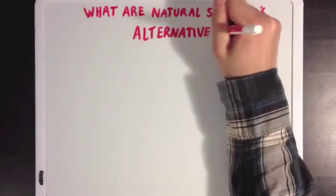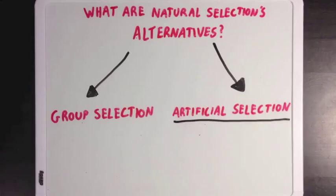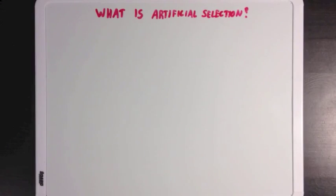So, we talked about the first alternative to natural selection, and this was group selection. But what about artificial selection? Well, in order to find out what artificial selection is, let's take a step back and look at natural selection one more time.